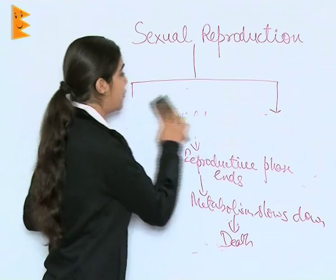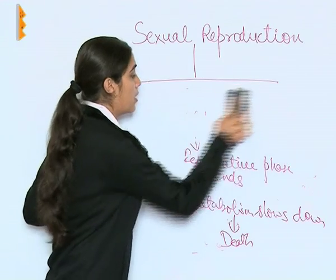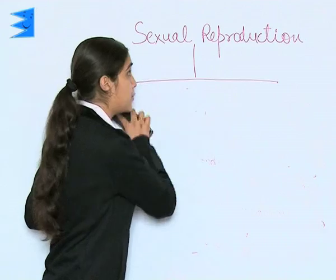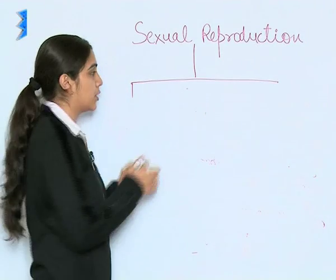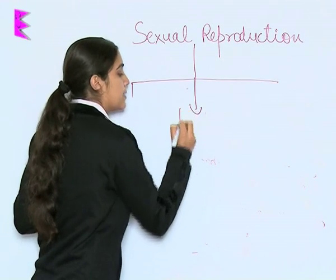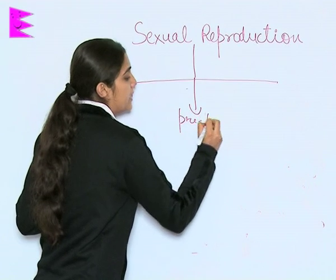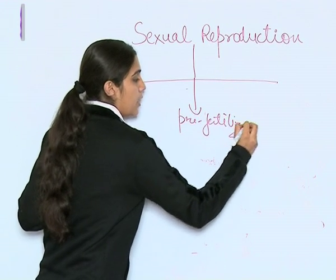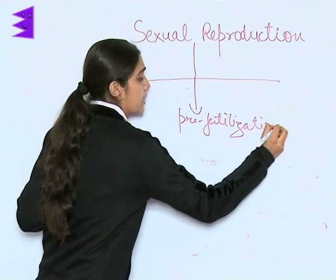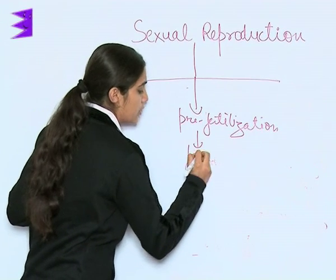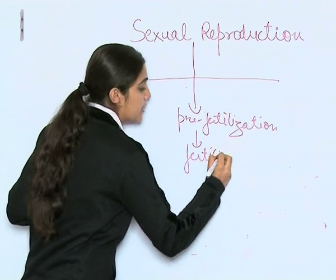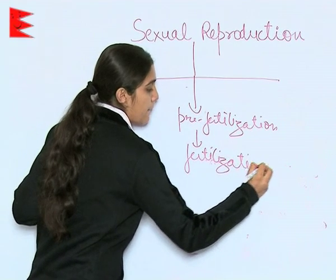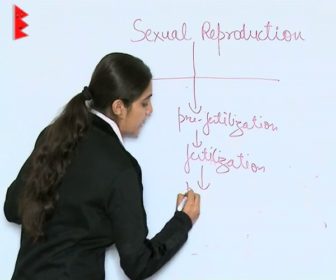What are the different phases or steps towards sexual reproduction? First is the pre-fertilization phase. Second is fertilization, and last is post-fertilization.